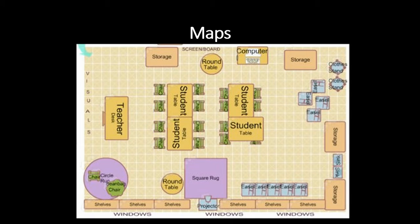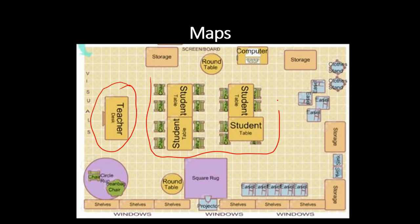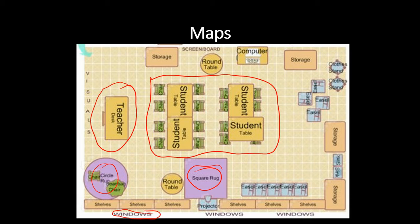This is a map of a classroom. On the map, it shows where the teacher sits. It also shows the tables and chairs where children sit. There are rugs where children can sit on the floor. It even says windows down here to show where the windows are.